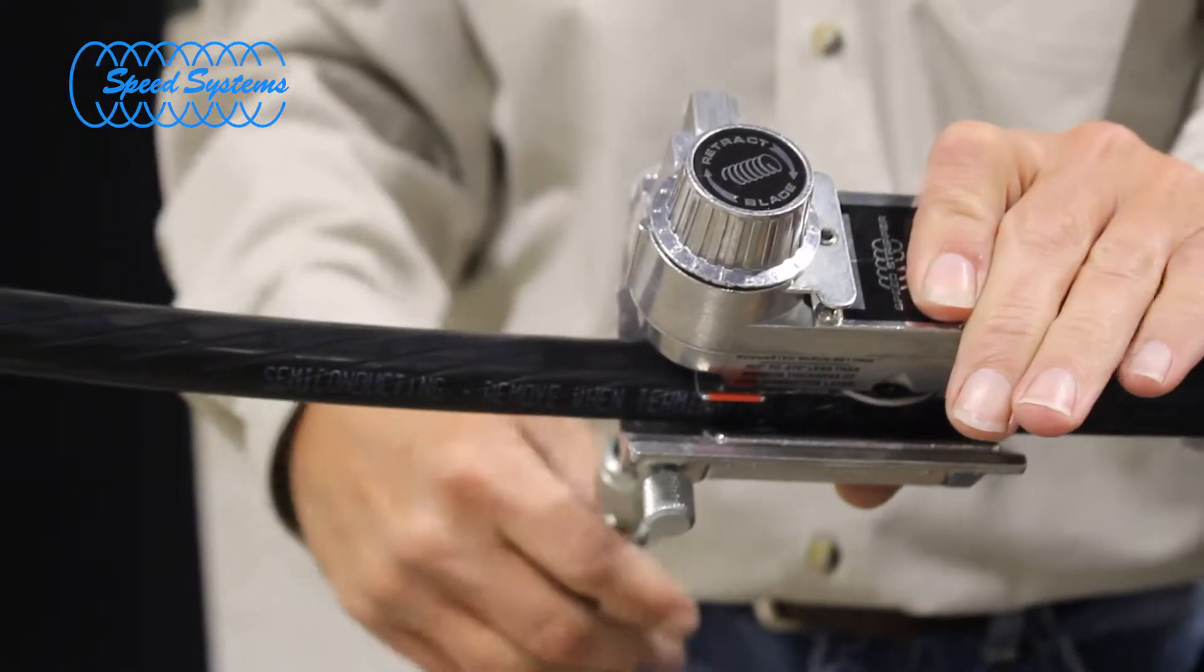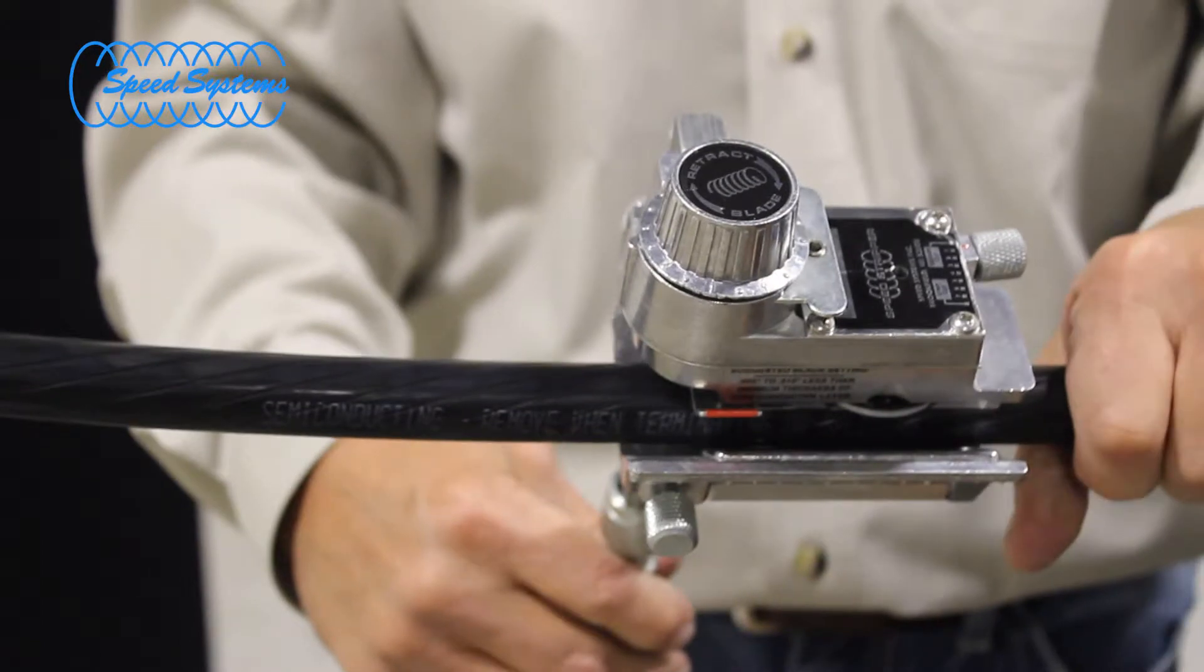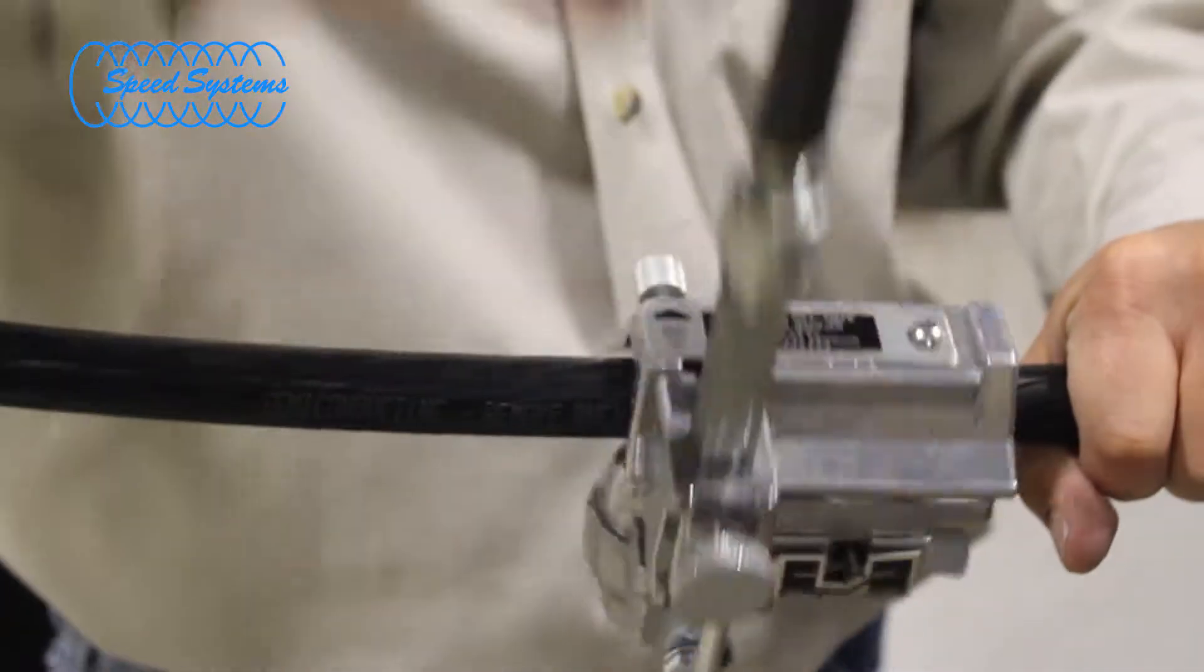With the blade in the square-cut position, place the tool on the cable with the blade at the proper Semi-Con strip-back length. Rotate the tool around the cable to score a ring cut on the Semi-Con.